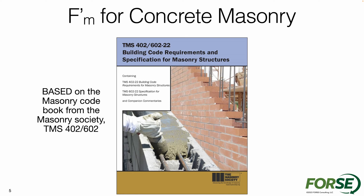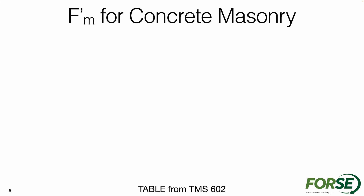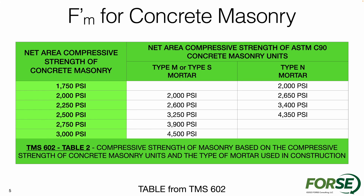The TMS 602 is going to be the specification for masonry structures. Table 2 within that part of the code is going to give us the values that we need to understand the design strength of masonry. Within this table that I have replicated here, on the left we can see the strength of the overall masonry assembly. On the right you can see two different columns for different types of mortar, and within those columns are the required block strengths to be used within those wall assemblies.